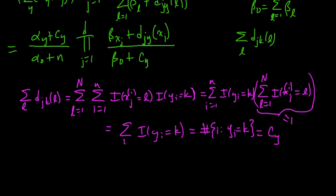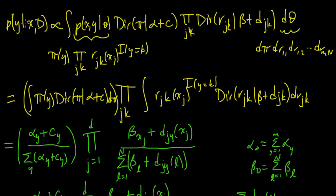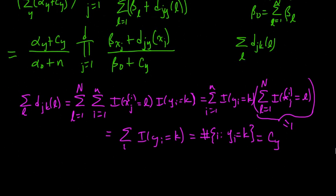All right, I think we've got it now. We've got, so we had this, was our predictive distribution. That was the thing that we needed to get our hands on to do our classification. And we got this,